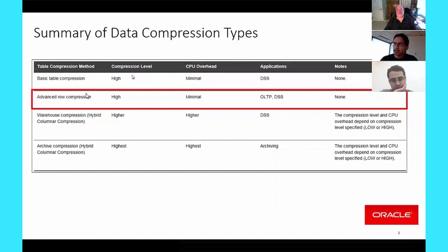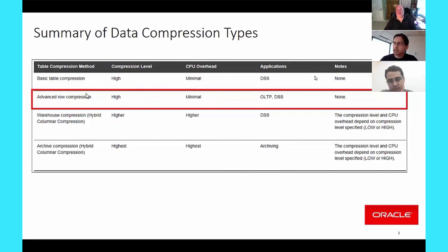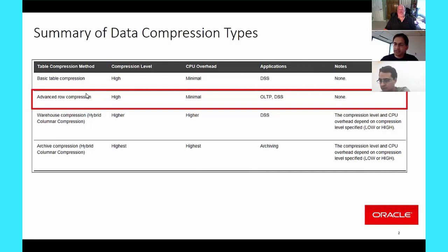The compression ratios are approximately the same between basic and advanced row compression. There are some differences between the compression algorithms, but we don't publicly disclose what those small differences are.